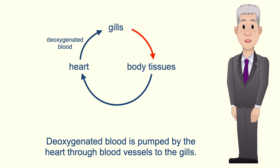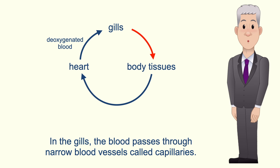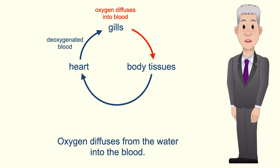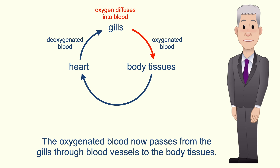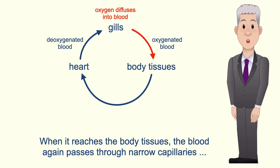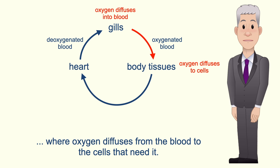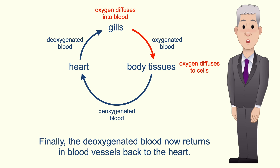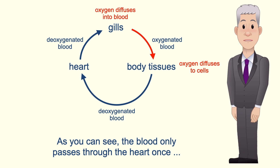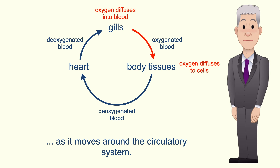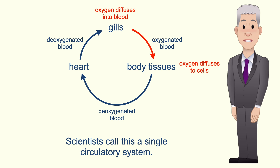I'm showing you here a simplified diagram of the circulatory system in fish. Deoxygenated blood is pumped by the heart through blood vessels to the gills. In the gills, the blood passes through narrow blood vessels called capillaries and oxygen diffuses from the water into the blood. The oxygenated blood now passes from the gills through blood vessels to the body tissues. When it reaches the body tissues, the blood again passes through narrow capillaries where oxygen diffuses from the blood to the cells that need it. Finally, the deoxygenated blood returns in blood vessels back to the heart. So as you can see, the blood only passes through the heart once as it moves around the circulatory system. Scientists call this a single circulatory system.